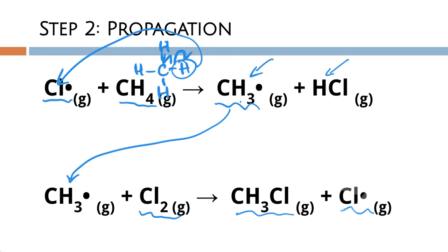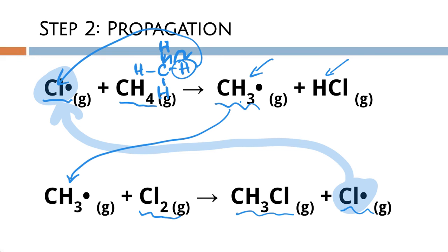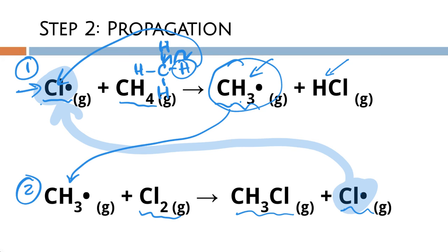Then the methane free radical reacts with another molecule of chlorine to create our final product plus a chlorine free radical. This chlorine free radical is the same as what we generated in step one, making this process cyclical — the chlorine free radical from reaction two reacts again in reaction one, and the methane free radical from reaction one causes reaction two to happen again, over and over until termination.